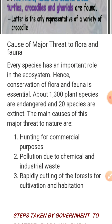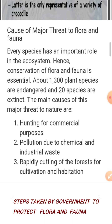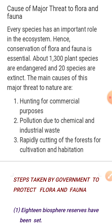Every species — whether plant or animal — has an important role in the ecosystem whose functioning it helps to complete. The conservation of flora (plant species) and fauna (animal species) is essential. About 1,500 plant species are endangered, and around 20 species are already extinct.